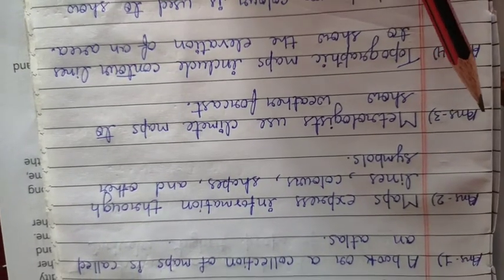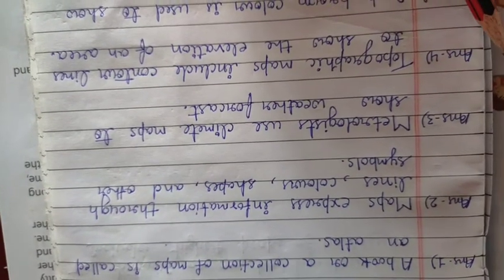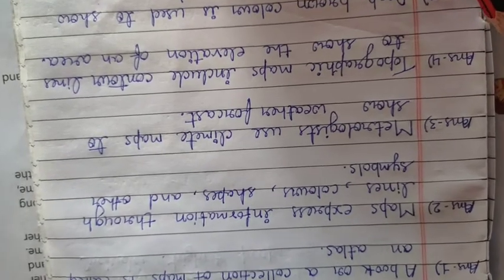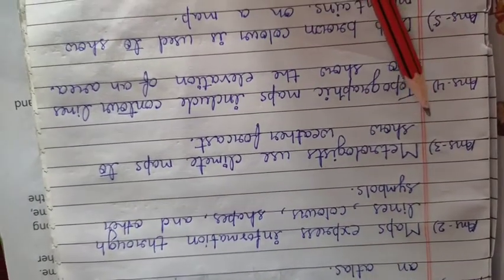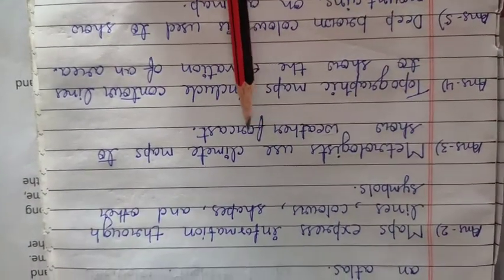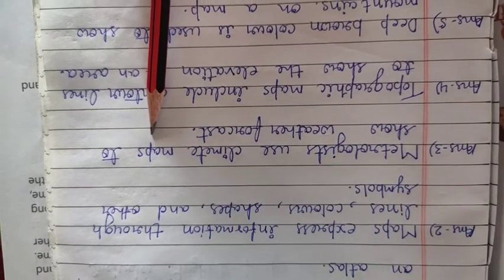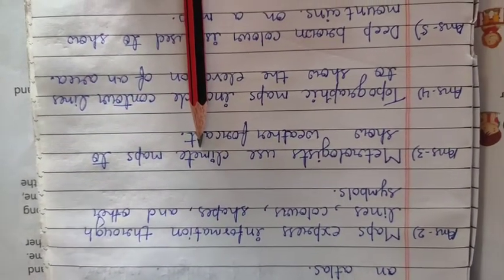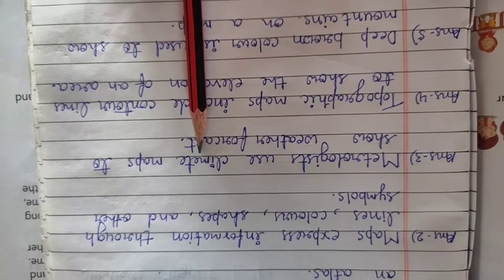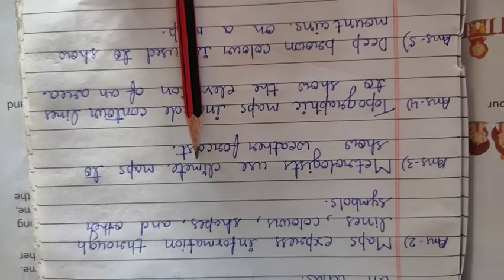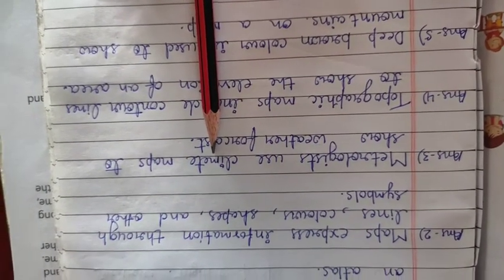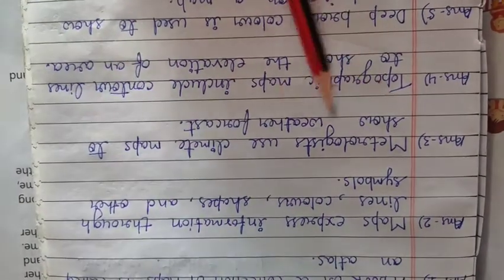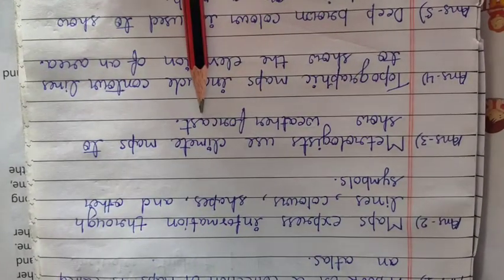Question number 3: which type of maps do meteorologists use to show weather forecast? Answer number 3: meteorologists use climate maps to show weather forecast.